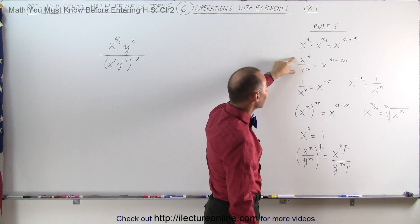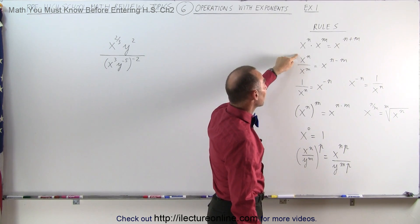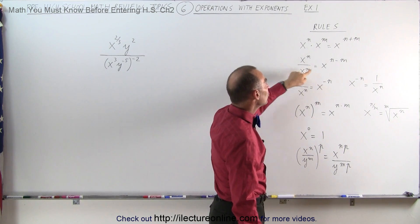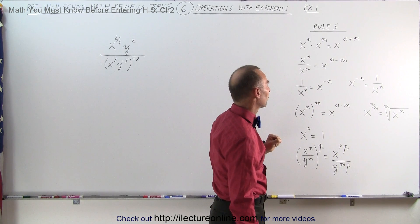But when you divide, x to the n divided by x to the n, then you subtract the exponents.